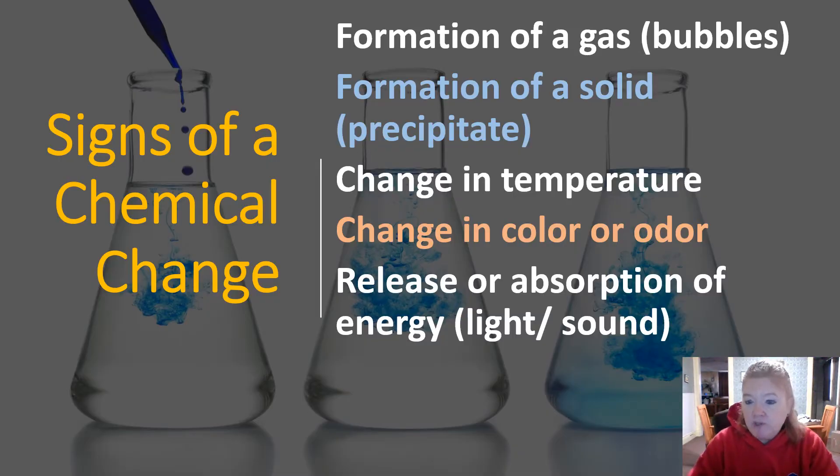Some signs of a chemical change. So formation of a gas, you see bubbles. Formation of a solid, that's called a precipitate. You might see a change in temperature, it gets warm, it gets cold. A change in color or a change in odor, like a smell you all of a sudden notice. And it could also be the release or absorption of energy. You might see light, hear sound.